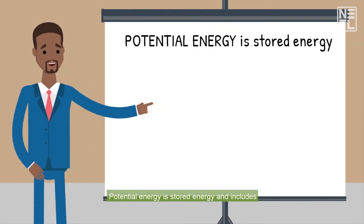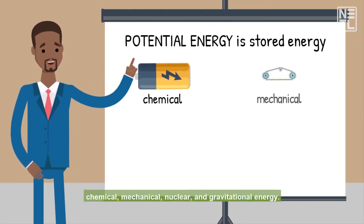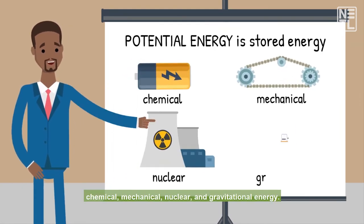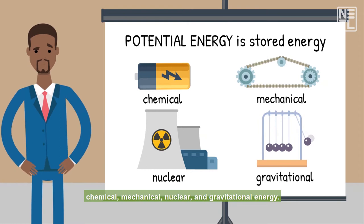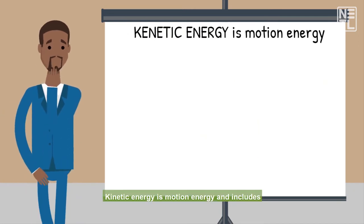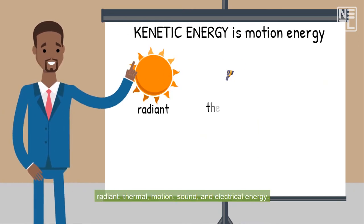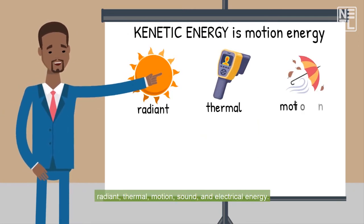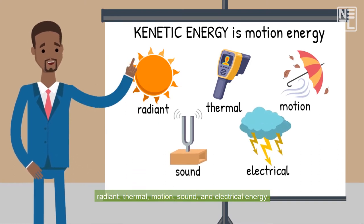Potential energy is stored energy and includes chemical, mechanical, nuclear, and gravitational energy. Kinetic energy is motion energy and includes radiant, thermal, motion, sound, and electrical energy.